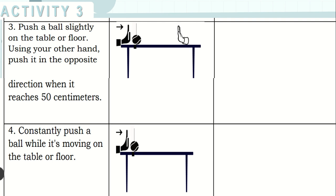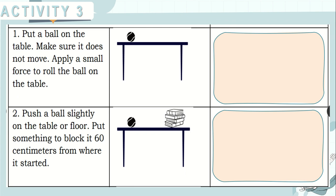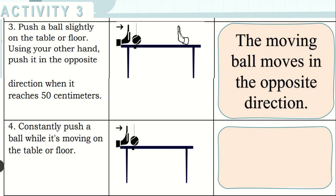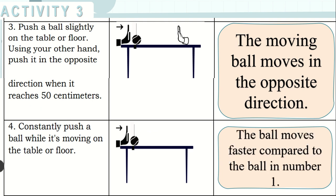Number four: Constantly push a ball while it's moving on the table or floor. Here are the answers. For number one, the ball at rest started to move. Number two, the ball bounced back after hitting the block or the ball may stop. Number three, the moving ball moves in the opposite direction. And number four, the ball moves faster compared to the ball in number one.